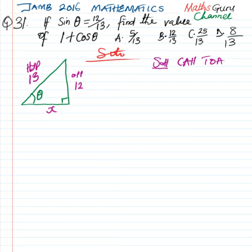Now, let's look for the value of x. By Pythagoras, the square of the hypotenuse is equal to the square of the opposite plus the square of the adjacent.